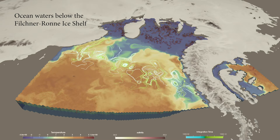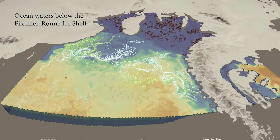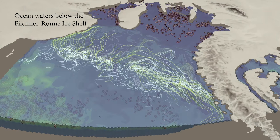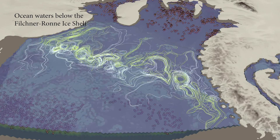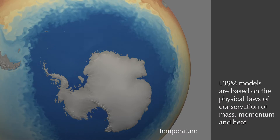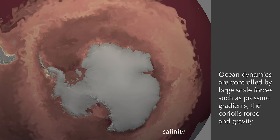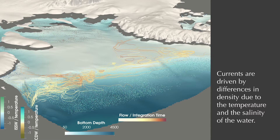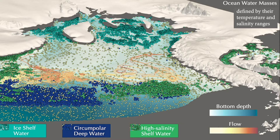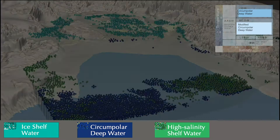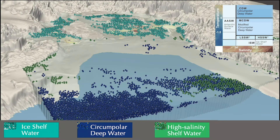Conditions under the ice shelves are not well understood and will change with warming ocean currents. Visualizations of water properties and currents within this complex coupled climate model help scientists understand the process of melting below ice shelves. E3SM models are based on the physical laws of conservation of mass, momentum, and heat. Ocean dynamics are controlled by large-scale forces such as pressure gradients, the Coriolis force, and gravity. Currents are driven by differences in density due to the temperature and salinity of the water. Oceanographers classify specific ranges of temperature and salinity into numerous categories of water masses. Tracking these masses helps them study the impacts of changing ocean currents and their effect on Antarctic ice sheet melt rates.